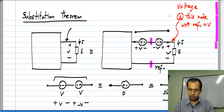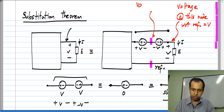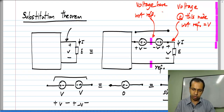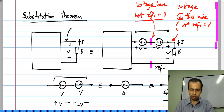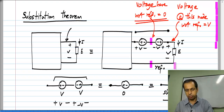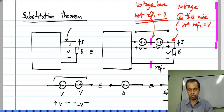So the voltage here with respect to the reference node equals a rise of V minus V due to the fall, which equals 0. So these two nodes highlighted in pink have 0 voltage — the reference by definition has 0 voltage, and this node has the same voltage as the reference, which is also 0.